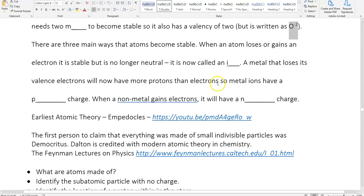There are three main ways that atoms can become stable. When atoms lose or gain electrons, it is stable but is no longer neutral, and it's called an ion. A metal that loses its valence electrons will now have more protons than electrons, and will now have a positive charge. When a non-metal gains an electron, it will have a negative charge.